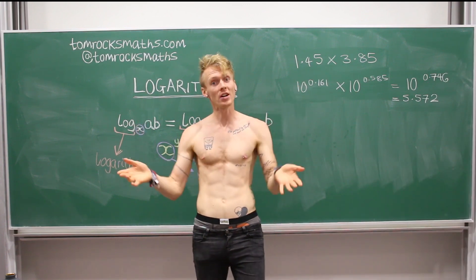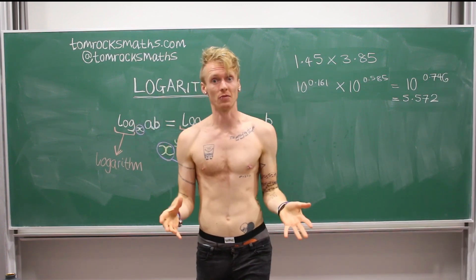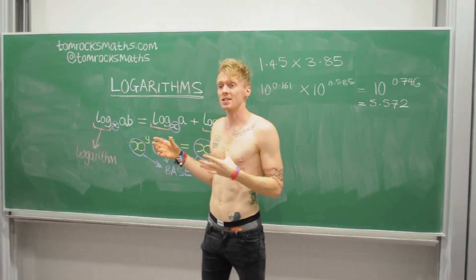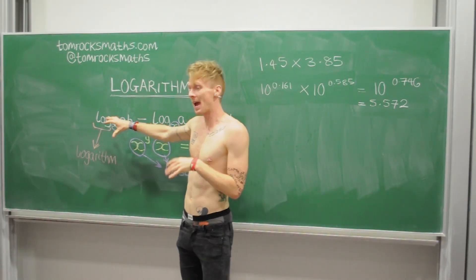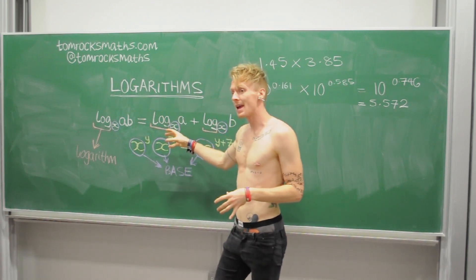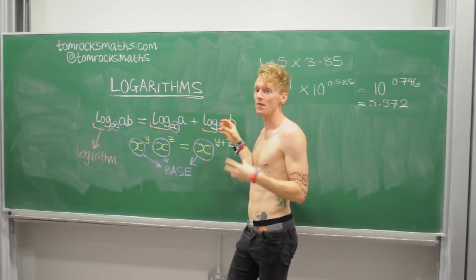Stripping back to our third layer now, we're going to look at the equation itself. Now, what this is telling us is that the logarithm of AB is equal to the logarithm of A plus the logarithm of B. And it's one of the main rules of logs.